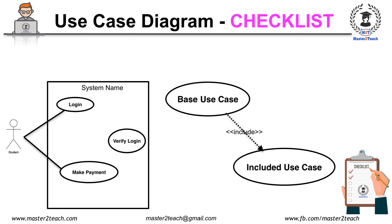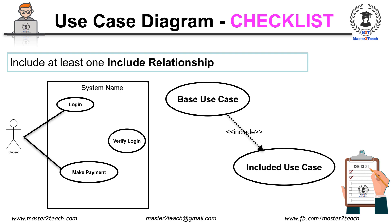In a use case diagram, try to include at least one include relationship — for example, login and verify login. The included use case is a use case which is automatically called by the system whenever the base use case is executed. Here, login is the base use case whereas verify login is the included use case. Make sure that included use cases are called automatically by the system, so there doesn't exist any relationship with the actors. Do not draw a line between the actor and the included use case. Check whether there is a line between the actor and the included use case or not.